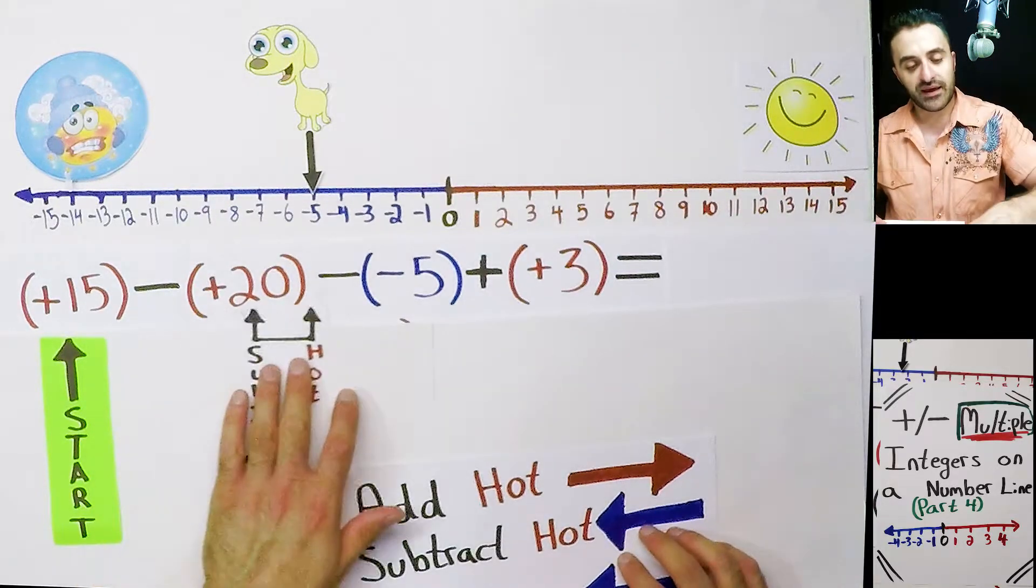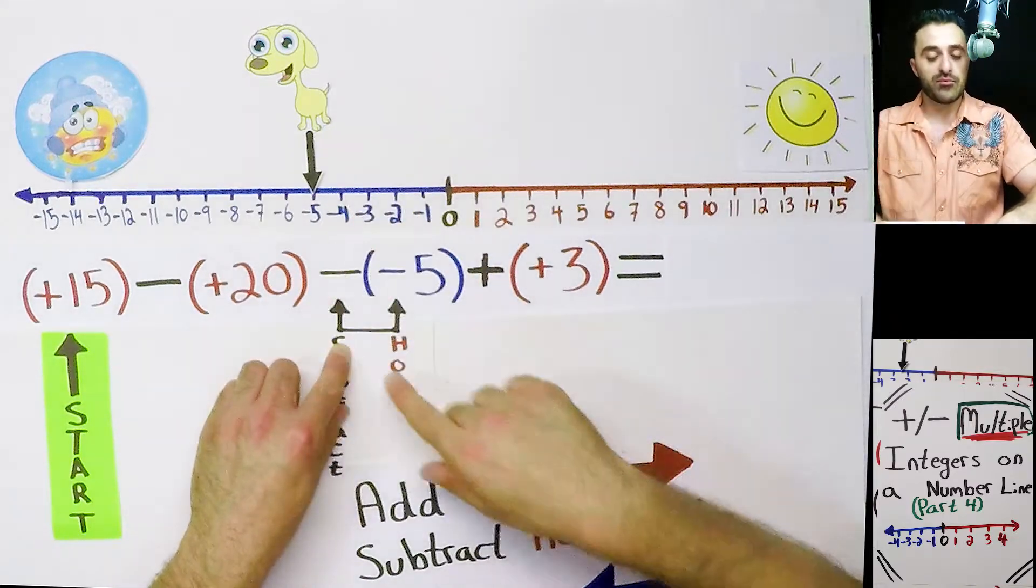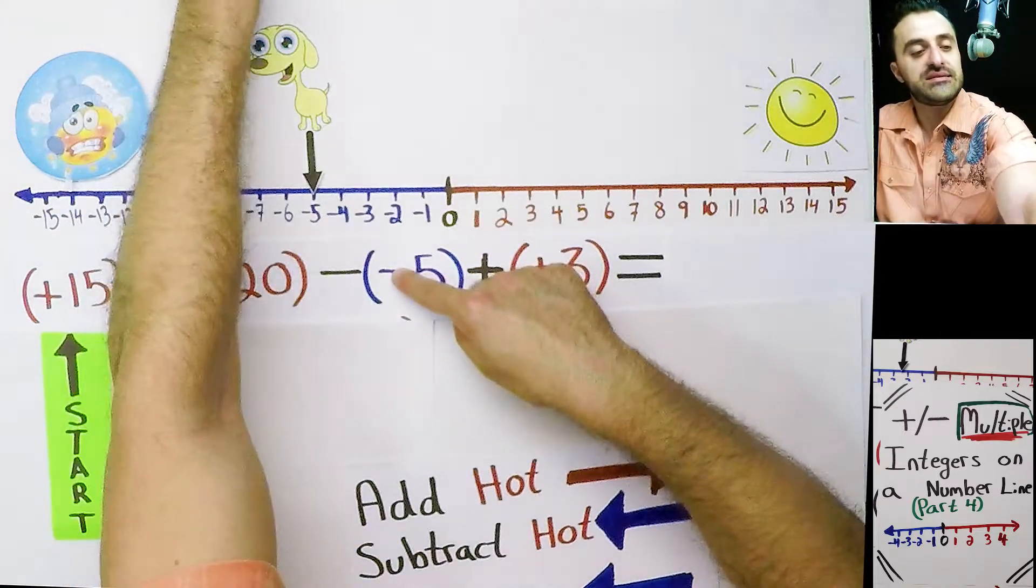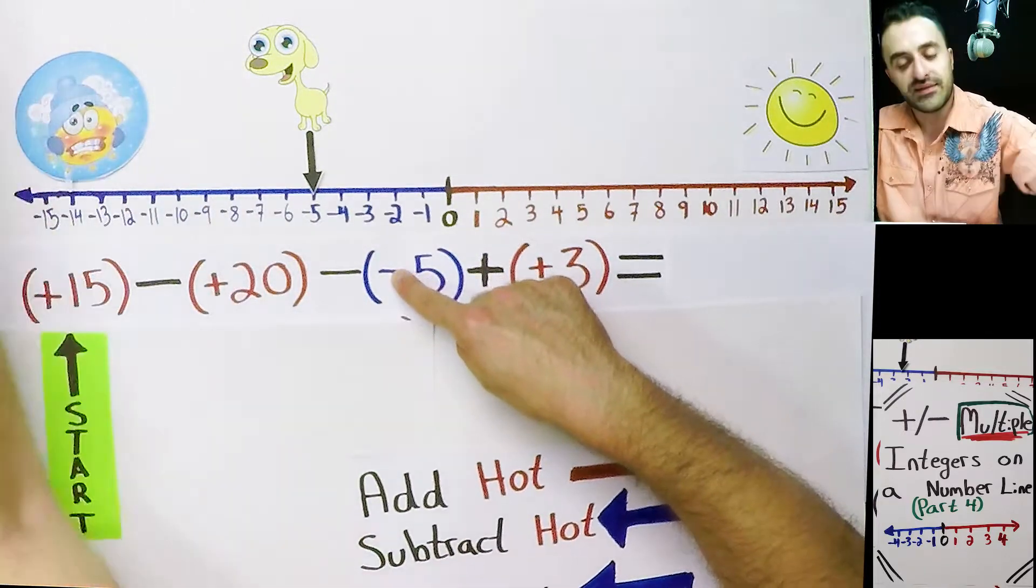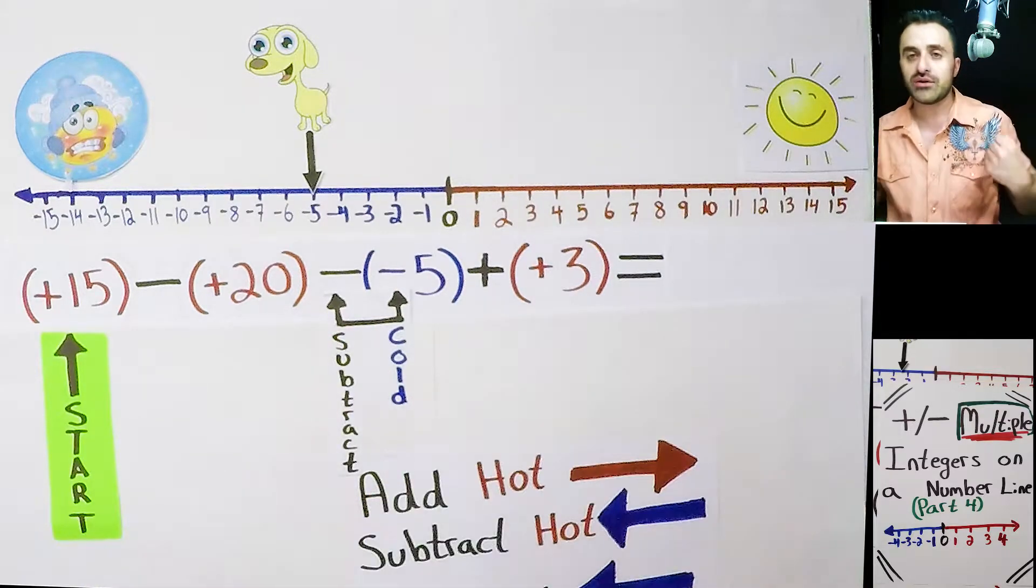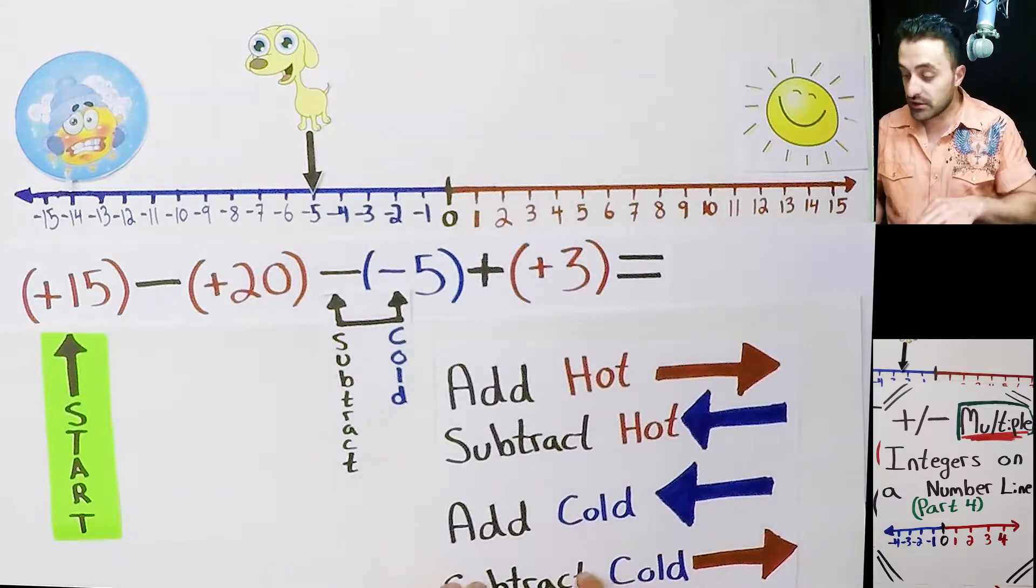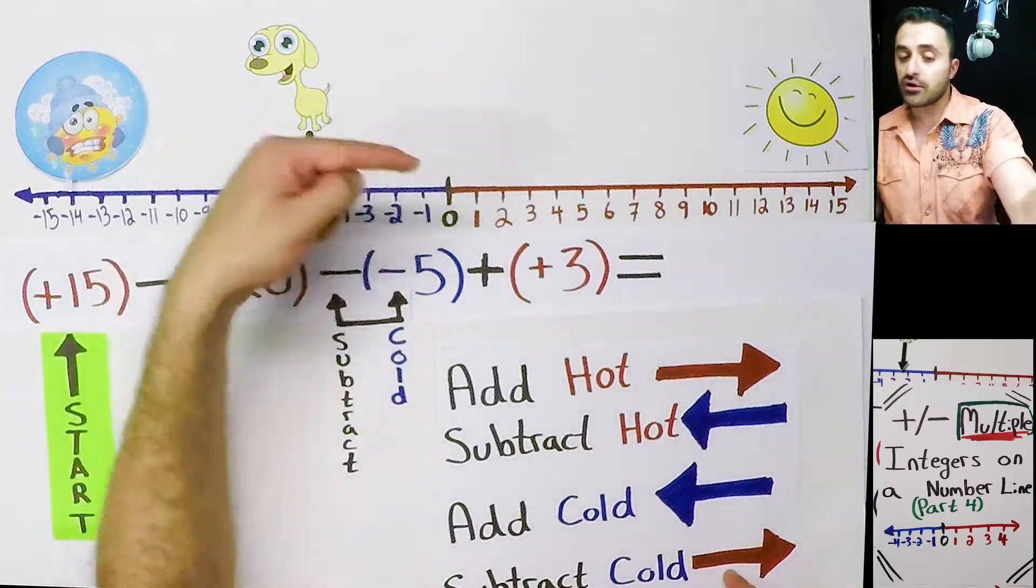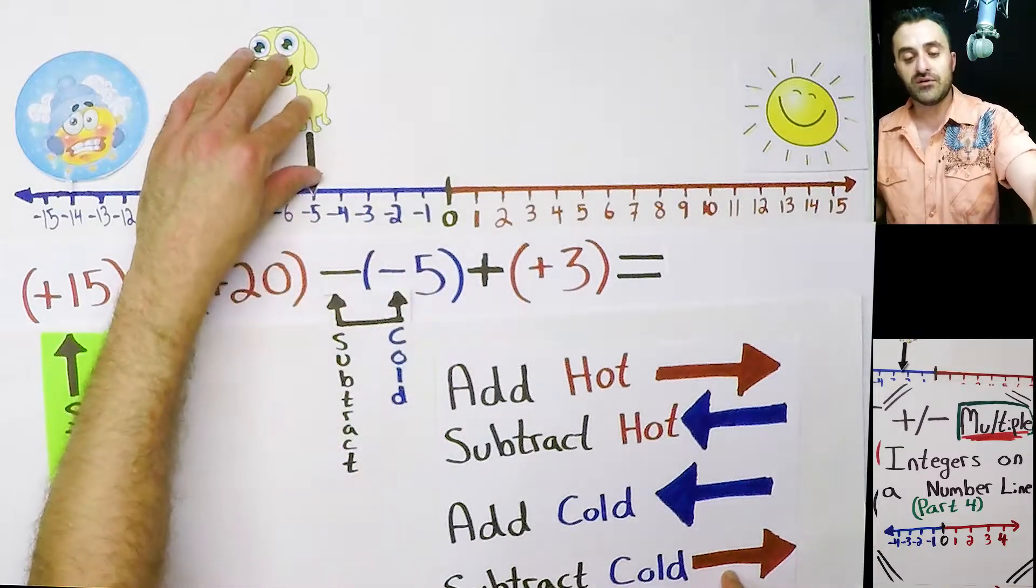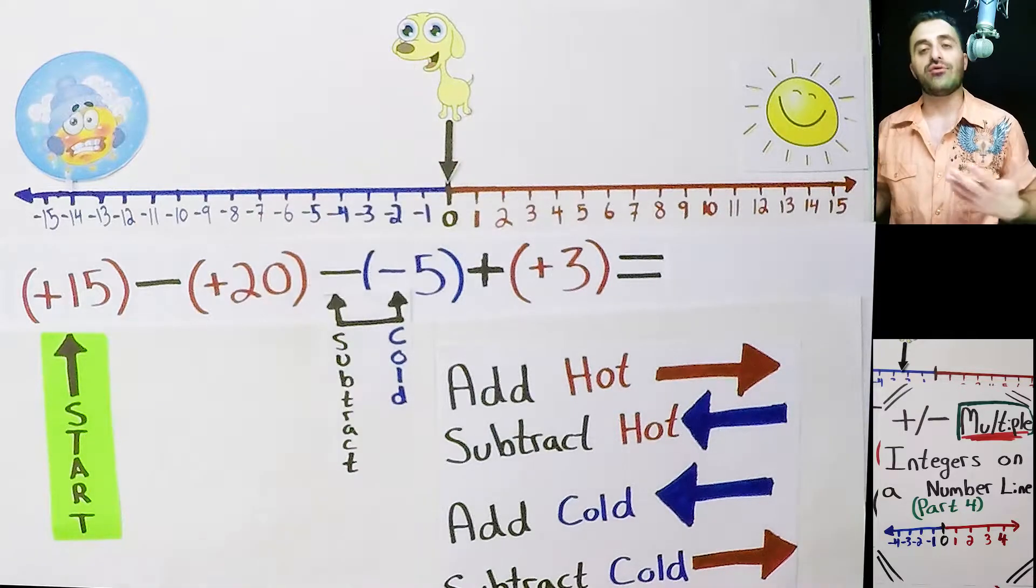We must move on to the next part. That doesn't say subtract hot anymore, that says subtract cold. Now what happens if we subtract cold? You take the cold out of your drink, what happens? Subtract cold, you need to move right. Hey puppy, you got to go right. Puppy says five spots to the right. He can do that. It's back at zero now.